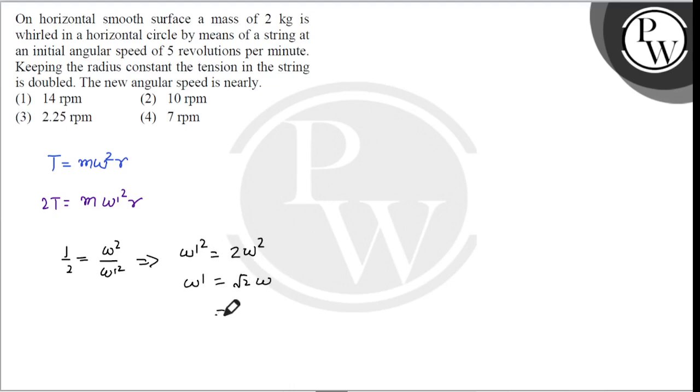So, root 2 is equal to 1.414 into 5 revolutions per minute, which is equal to approximately 7 revolutions per minute, which is option 4. I hope you understood the solution. Thank you.